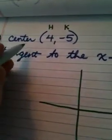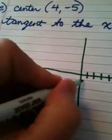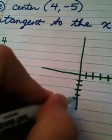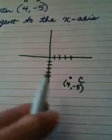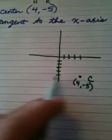And I'll explain what the word tangent means when I do my drawing. The center of the circle is (4, -5). So my center is right here. It's located in that quadrant at the ordered pair (4, -5).